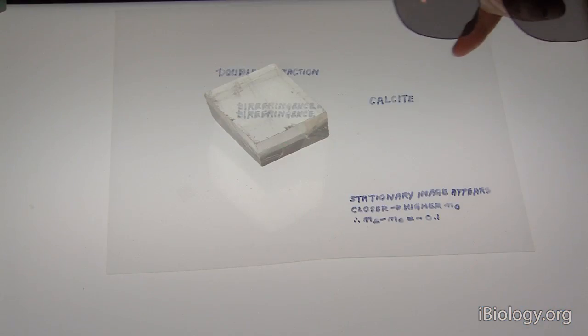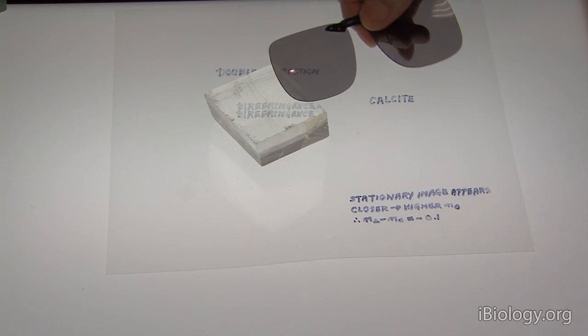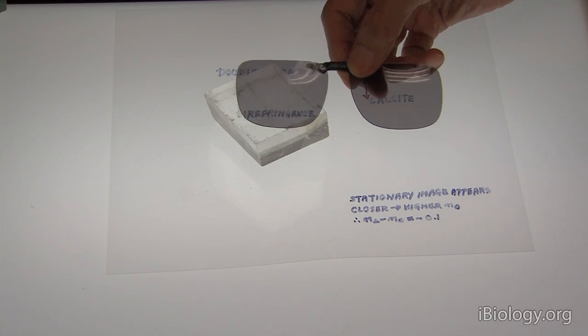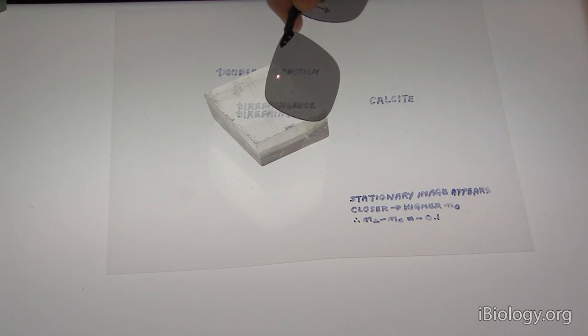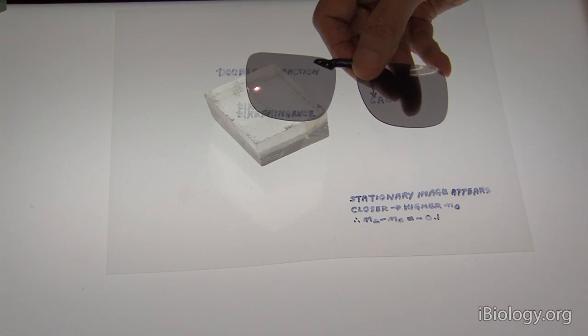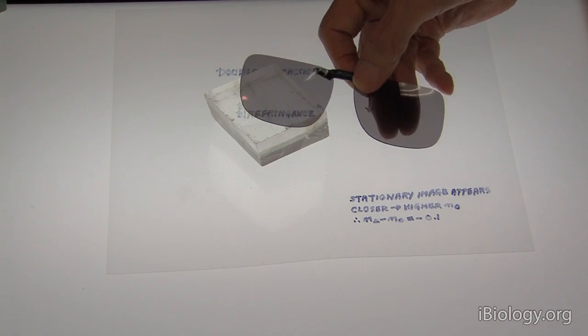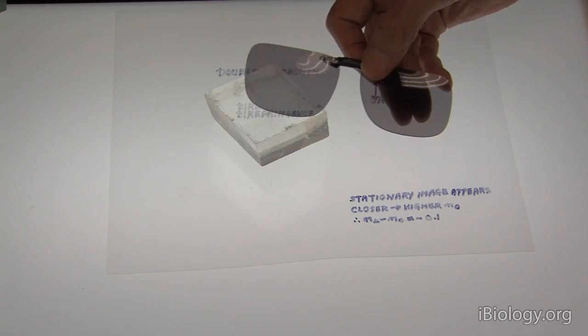Because it's double, it's called birefringence. But now, if we put a pair of sunglasses in front of it, one or the other of the images disappears. What this is telling us is that the light that comes through the birefringent material is itself plane polarized.